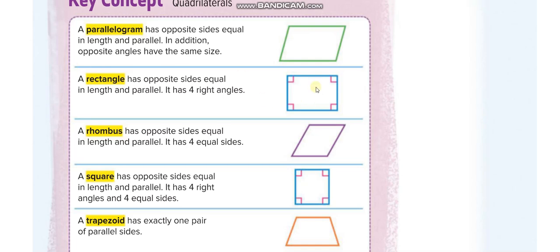A rectangle is just like a parallelogram — opposite sides are equal in length and parallel. There is an additional characteristic: a rectangle has four right angles. So you can say a rectangle is also a parallelogram, but you cannot say a parallelogram is also a rectangle, because a parallelogram doesn't necessarily have four right angles.